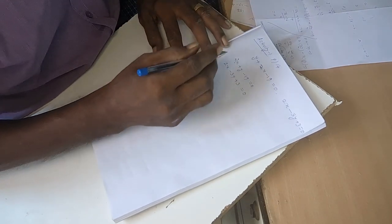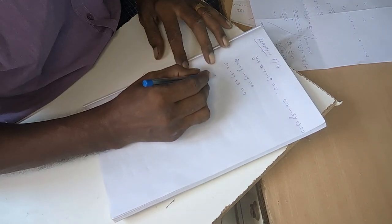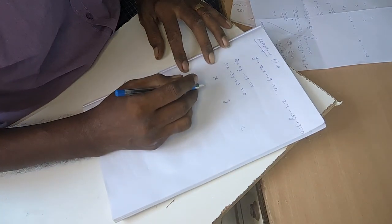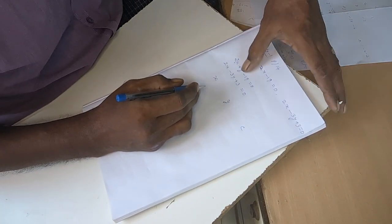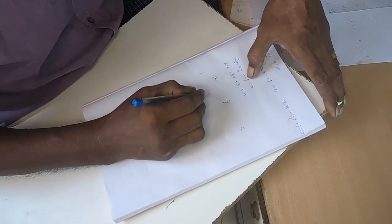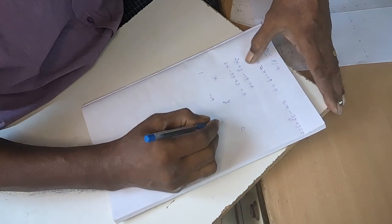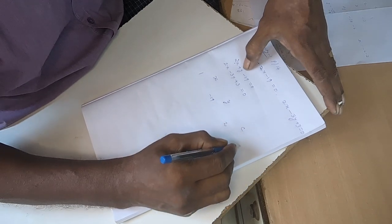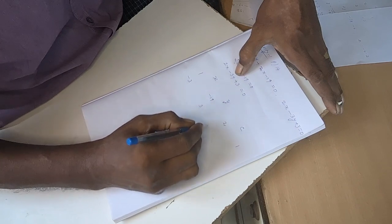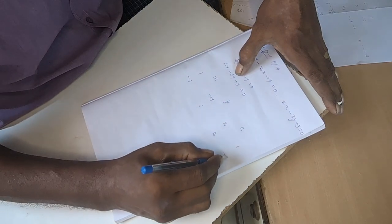Now by Cramer's rule, by determinant method, we have to solve for x and y. We start with the coefficient of x, coefficient of y, then constant. The coefficient of x is 2, coefficient of y is 1, then minus 19. Same way for the second equation: 2, minus 3, plus 3.